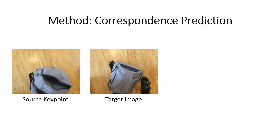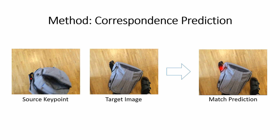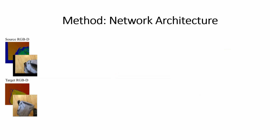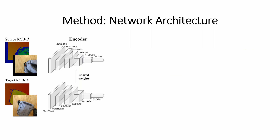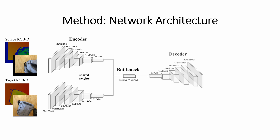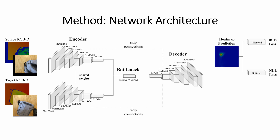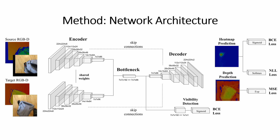Given a source RGBD frame and a selected keypoint, we predict the keypoint position in the target frame. The inputs to the network are the source RGBD patch and the target RGBD patch. Both RGBD patches are encoded using an encoder with shared weights. A bottleneck layer is used to concatenate the encoded features, and a decoder outputs the keypoint prediction as a heatmap. In addition, we predict a visibility score to handle occlusions, and we predict the depth of the keypoint in the target image, which we use for correspondence filtering.